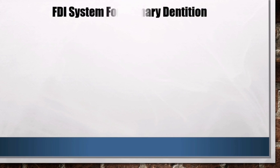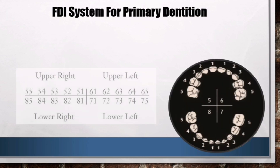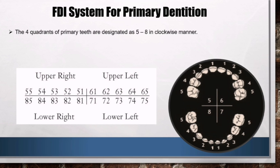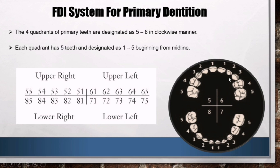FDI System for Primary Dentition: the four quadrants of primary teeth are designated as five to eight in a clockwise manner. Each quadrant has five teeth, designated as one to five beginning from the midline.